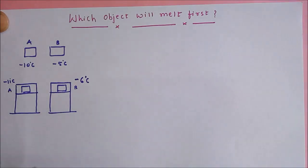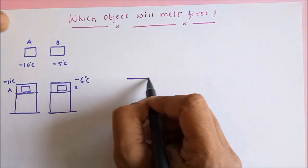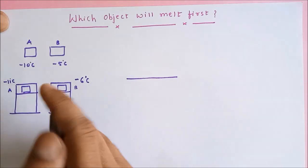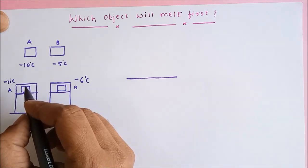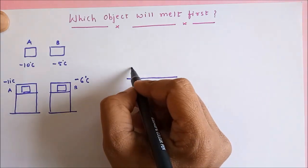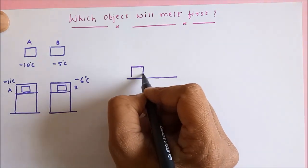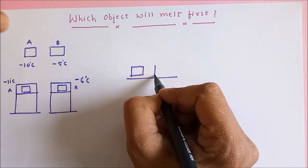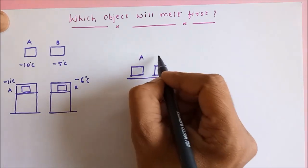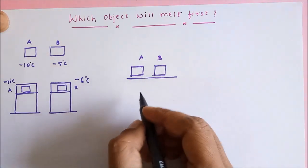Now what I am doing is I am removing these two objects from the refrigerators and I am placing them over here together. So A and B both are placed together outside in the open.